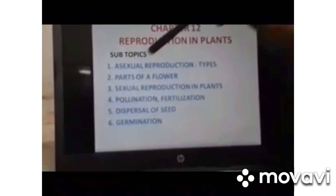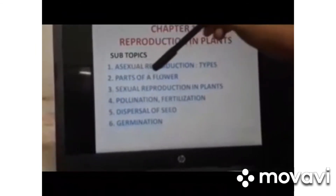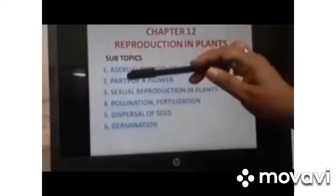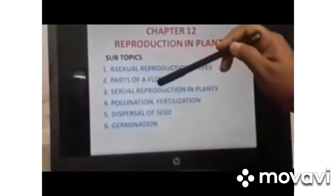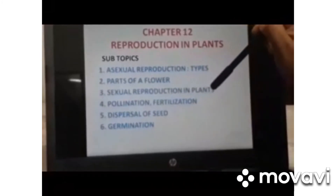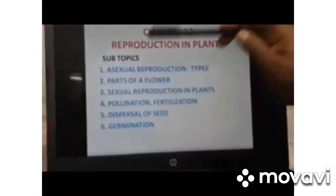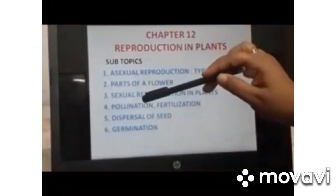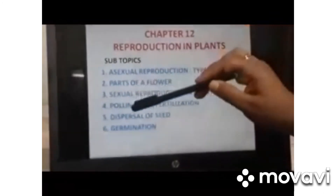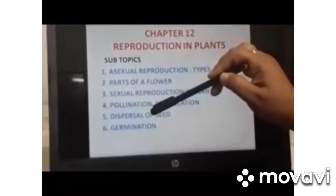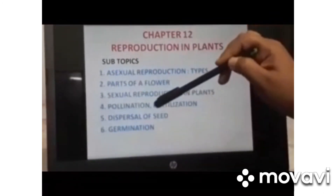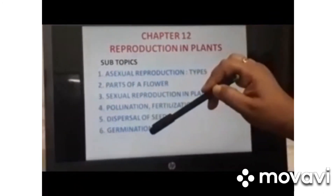Chapter 12 deals with Reproduction in Plants, under which we will learn about asexual reproduction and its types, parts of a flower, sexual reproduction in plants, pollination, fertilization, dispersal of seed and germination.